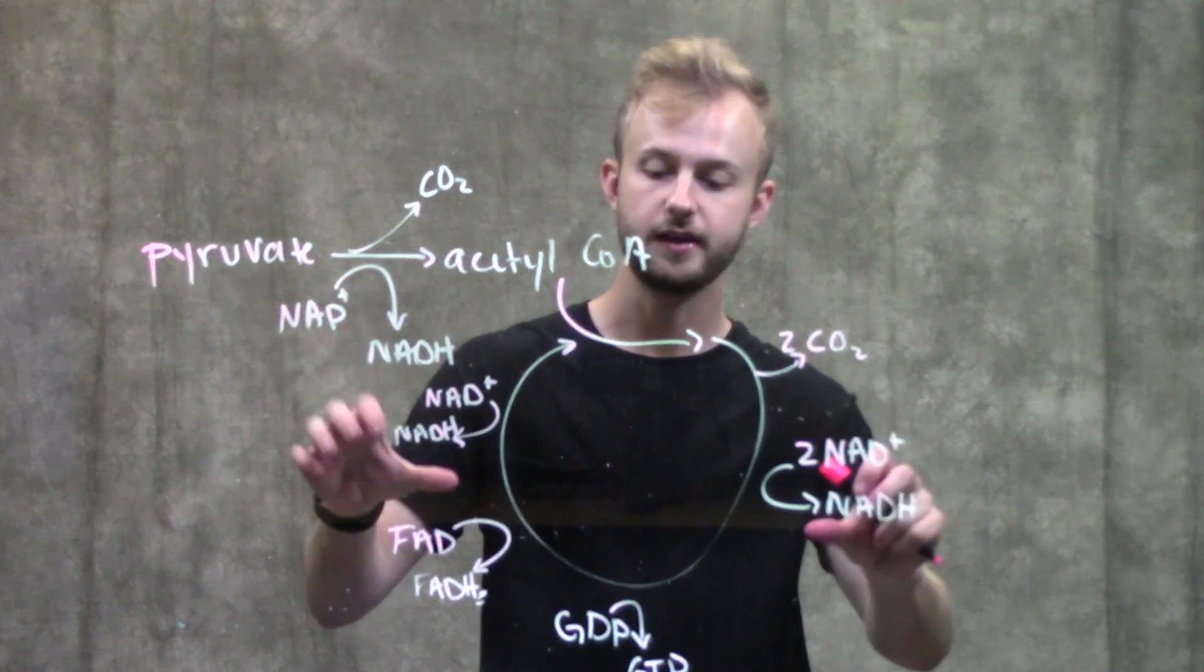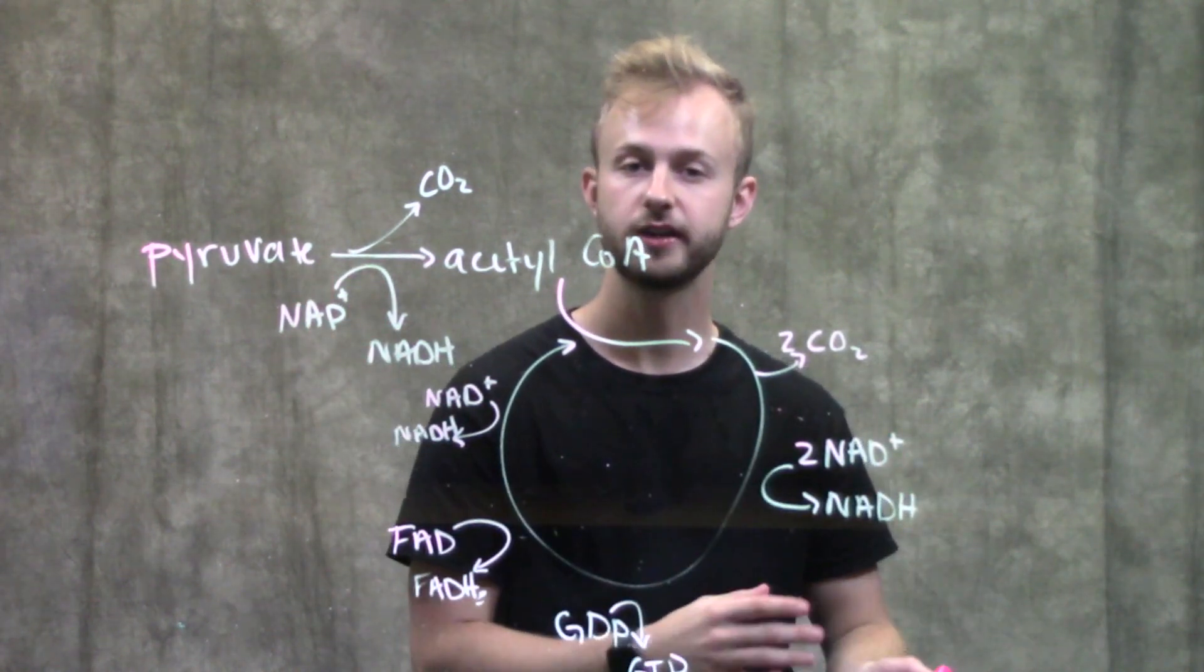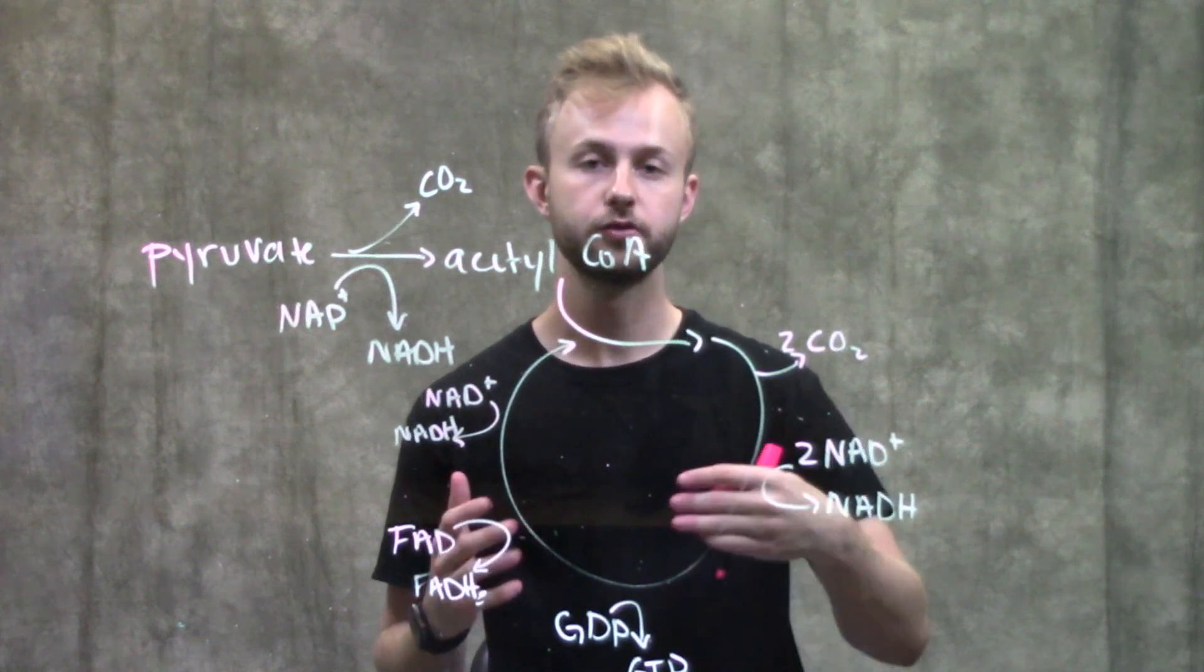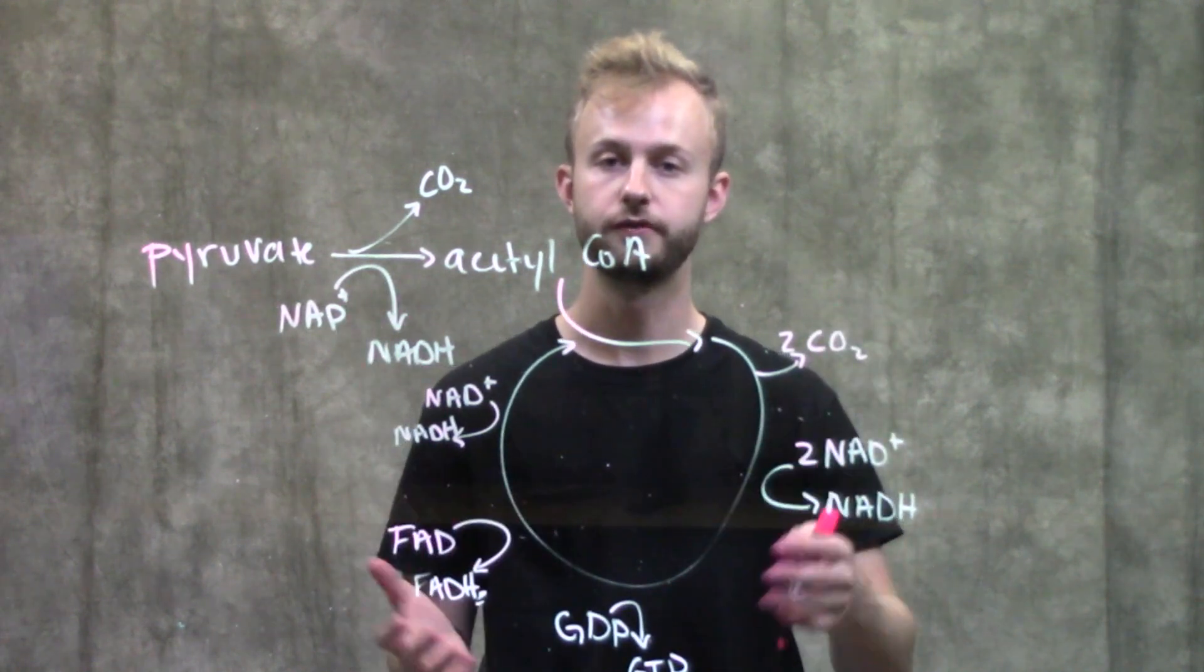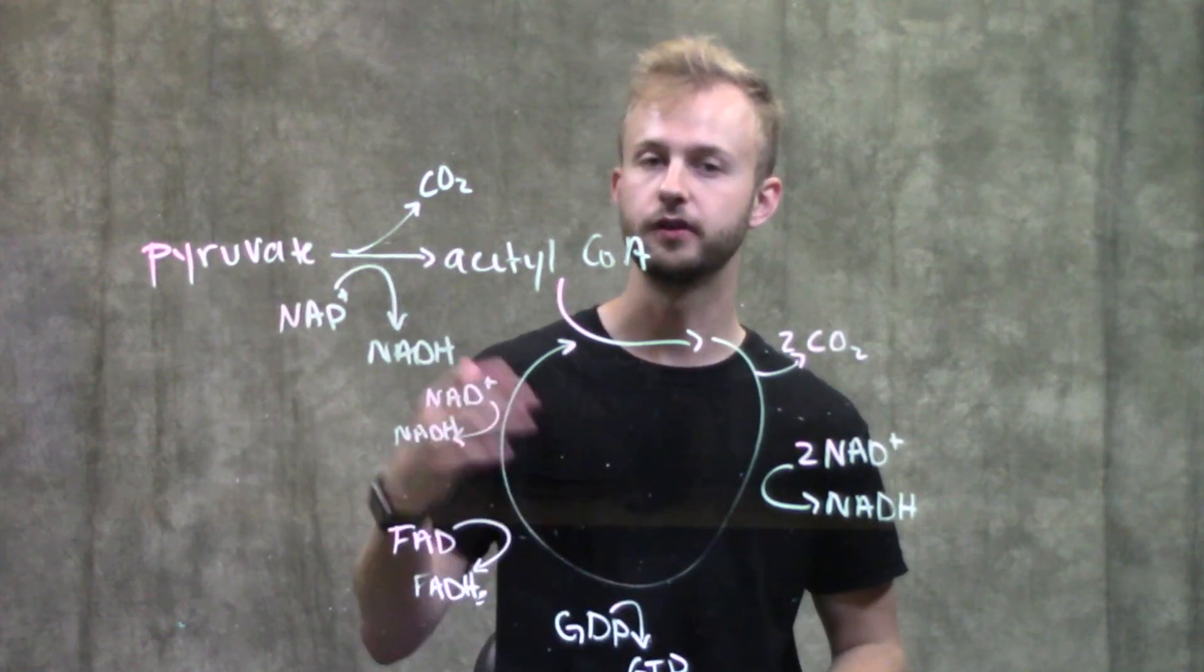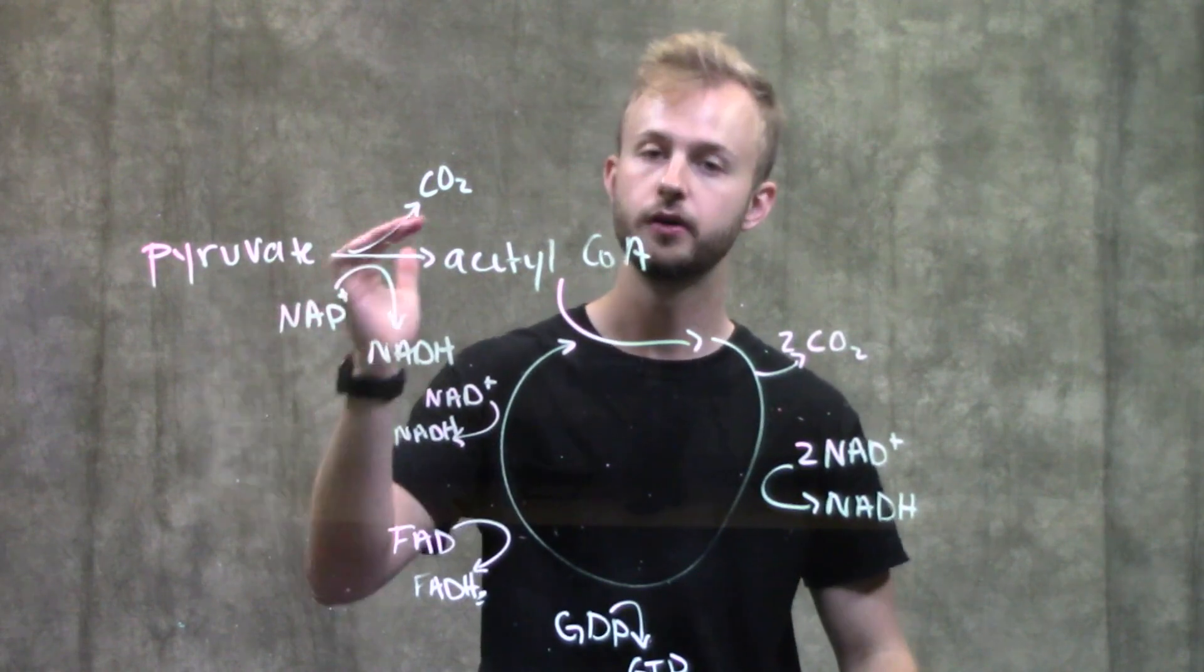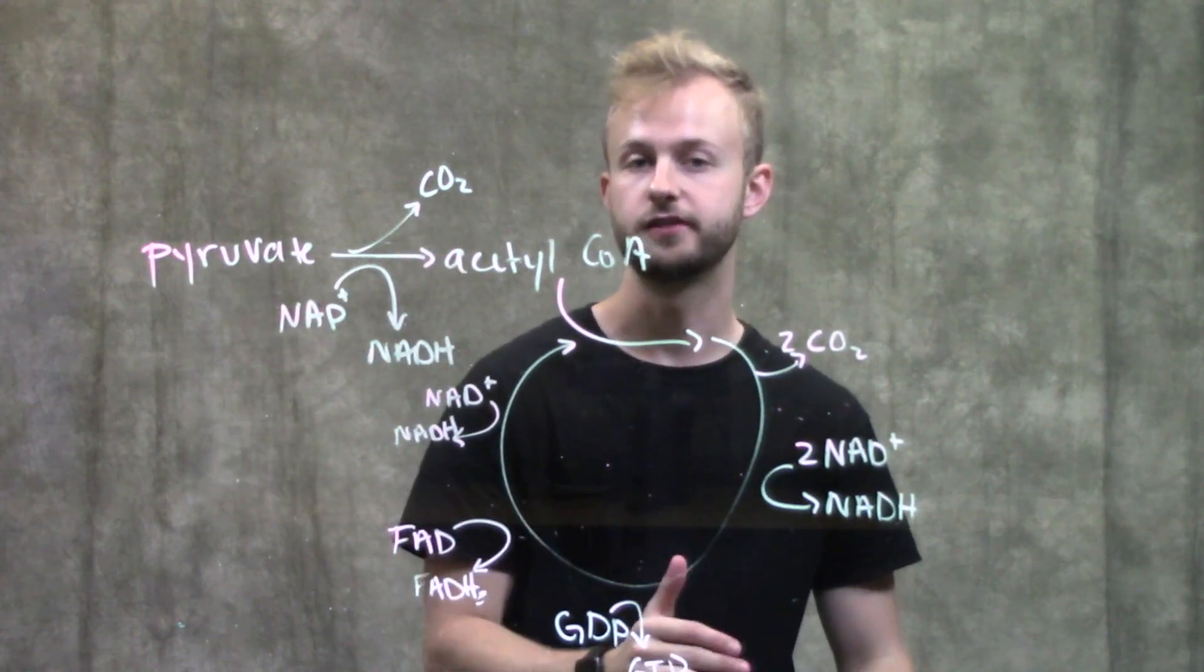And so what's going to happen is these NADHs and FADH2 are going to take those electrons to the electron transport chain, where they're going to be used to pump protons and make a proton gradient that will eventually drive ATP formation. But none of that would be possible if we don't extract this energy and store it in these molecules through pyruvate oxidation and the citric acid cycle.